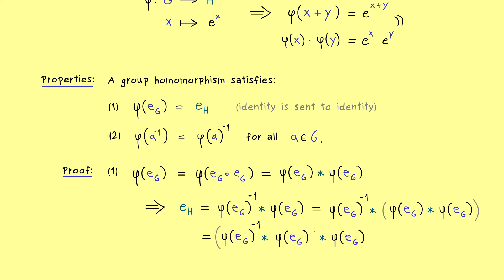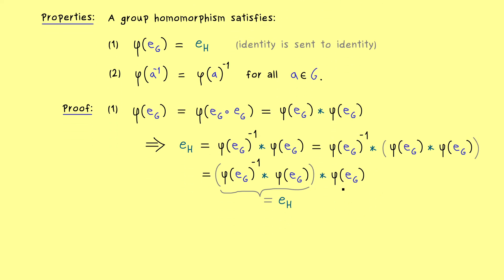Therefore on the right hand side, we simply have φ(e_G), and on the left hand side, e_H. So exactly what we wanted to prove. A group homomorphism always sends the identity to the identity. And now this property we can use to prove our second part here.